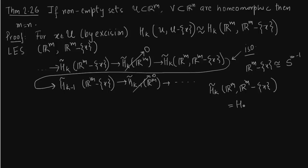If you take a point out of the real space Rm, it is equivalent to a sphere. That is what I have done here — I replaced Rm minus x with the sphere. And you already know the reduced homology group of the sphere is Z (integers) for k equal to m, and 0 otherwise.